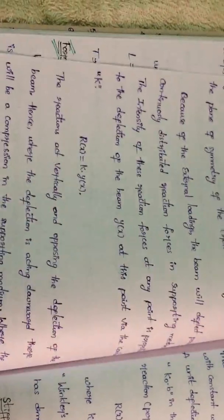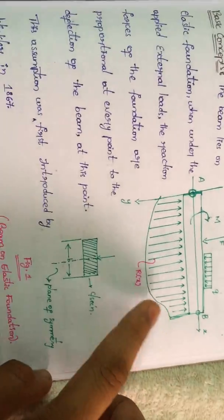So r of x equal to k into y of x. So here we have the point now y of x and this r of x.